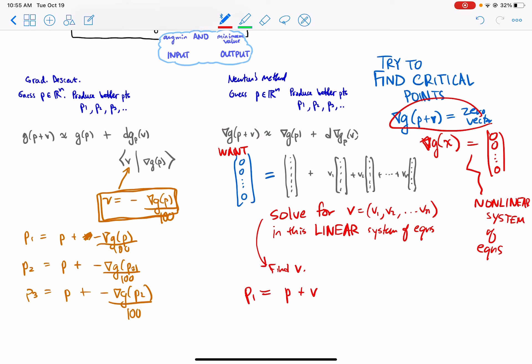But linear approximation is only an approximation. So we only expect P1 to be closer to the solution, and then we'll repeat and set P2 to be P1 plus some other V, where we solved now a new linear system by linearizing at P1, taking the derivative at P1 instead and repeating.